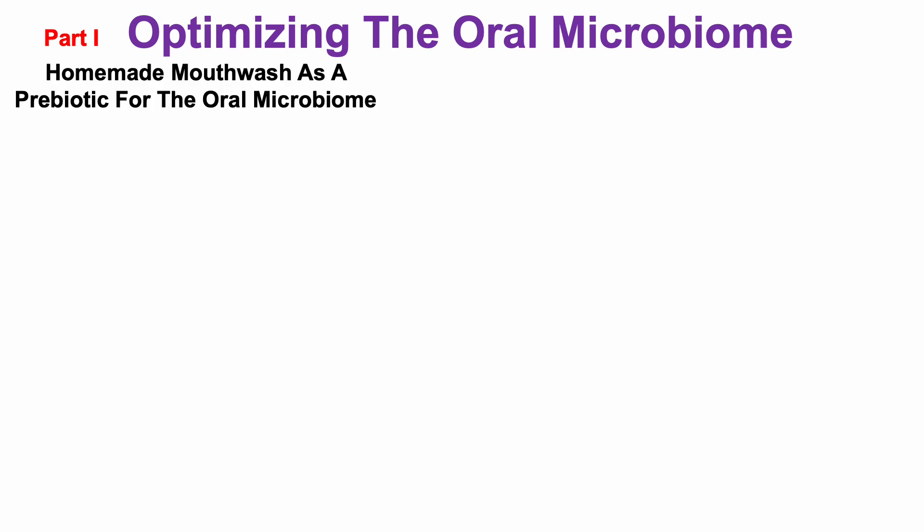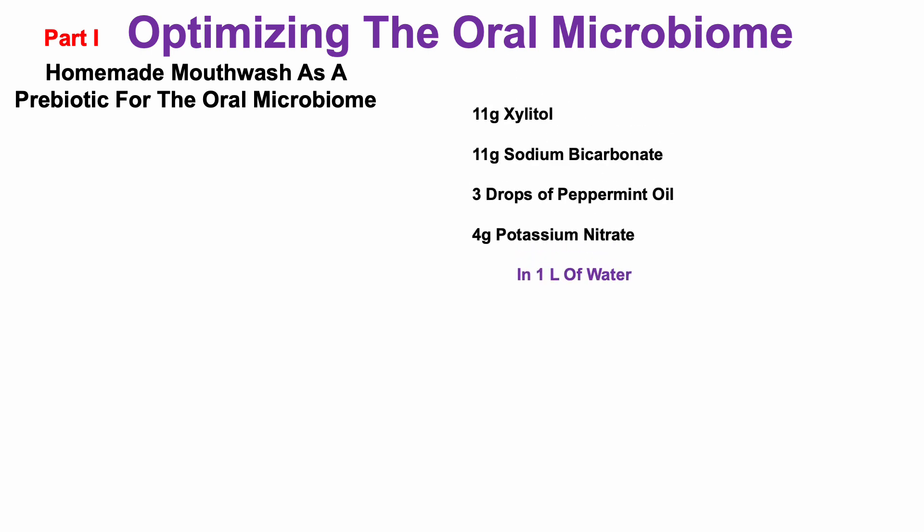In part one of optimizing the oral microbiome, we saw that I was using a homemade mouthwash as a prebiotic for the oral microbiome. That mouthwash includes 11 grams each of xylitol and sodium bicarbonate, three drops of peppermint oil, four grams of potassium nitrate, all together as a prebiotic mixture in one liter of water.